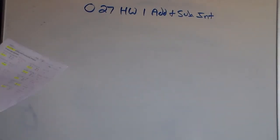All right, we have 0.27, HW1, adding and subtracting integers. We're going to go over the first five problems, and then you're going to be responsible for problems 6 through 10.